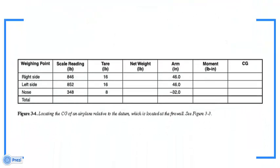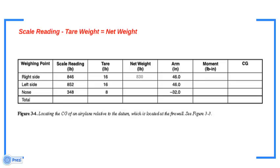When the airplane is on the scales with the parking brakes off, place chocks around the wheels to keep the airplane from rolling. Subtract the weight of the chocks, called tare weight, from the scale reading to determine the net weight at each weighing point.